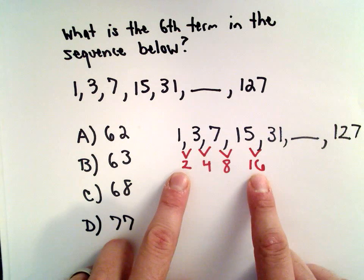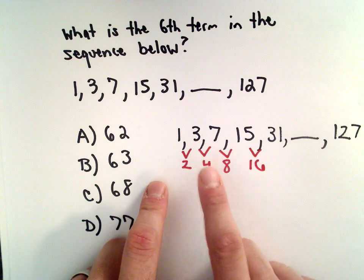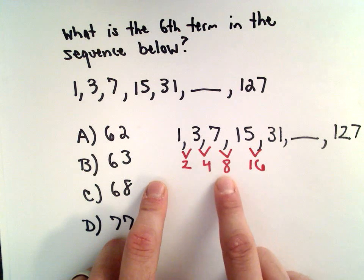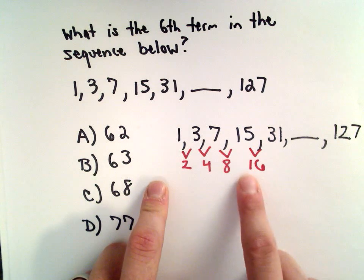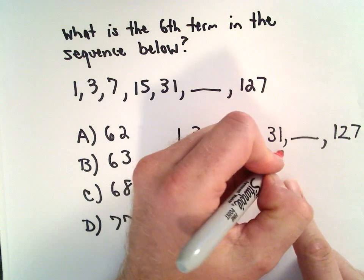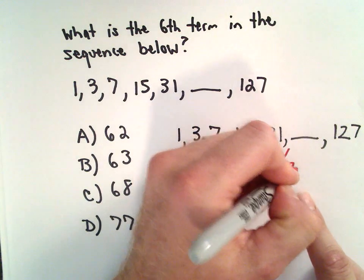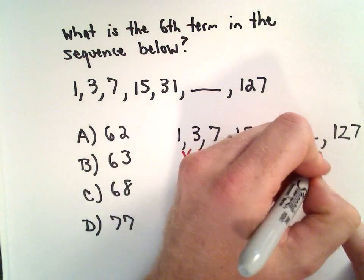Let me say that again. 2 times 2 is 4. 4 times 2 is 8. 8 times 2 is 16. 16 multiplied by 2, that would be 32. 32 multiplied by 2 would be 64.